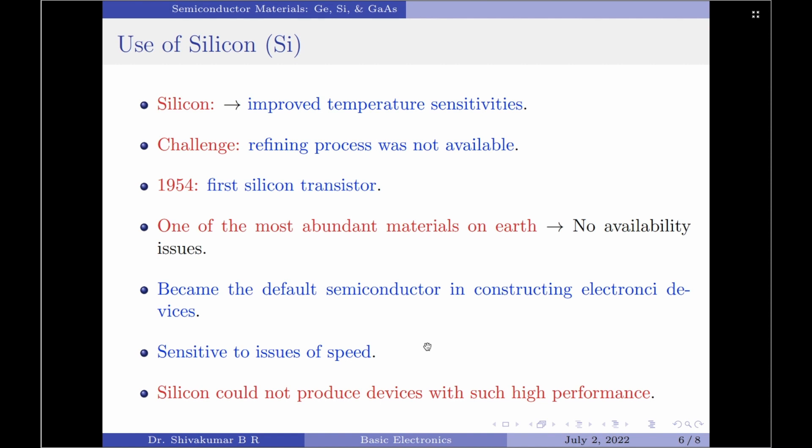Another important aspect that led to silicon becoming semiconductor material of choice is that it is one of the most abundant materials on earth. Therefore, any availability related concerns were completely eliminated.